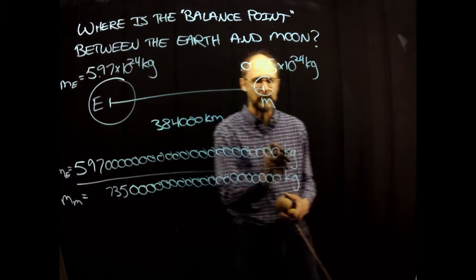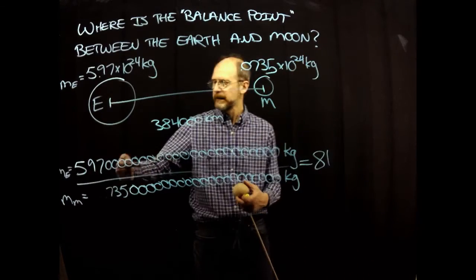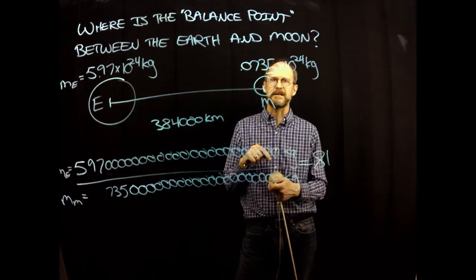So if I take the mass of the earth divided by the mass of the moon, it turns out that that ratio is about 81. In other words, you could take 81 moons and mash them together, you'd have the same mass as the earth.